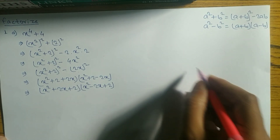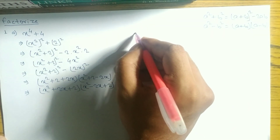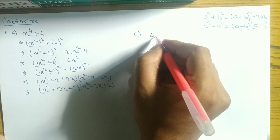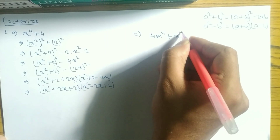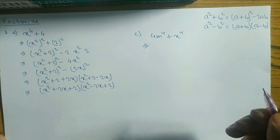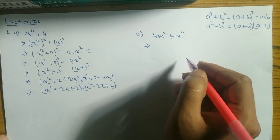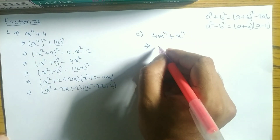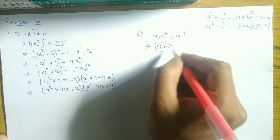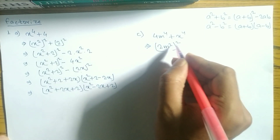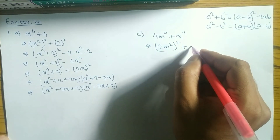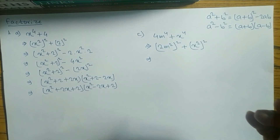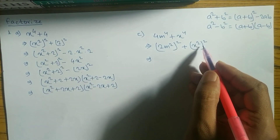Now look at question 1b — same process you can do. Question 1c: 4m⁴ + x⁴ — a slightly different type. I will do this one; similar types you can try yourself. We need to convert this into the form of a² + b². We can write (2m²)² + (x²)².